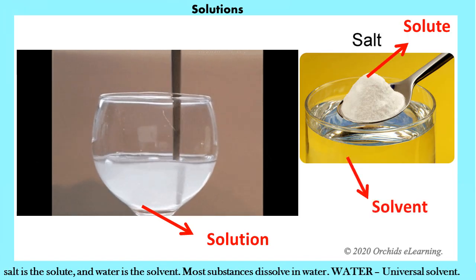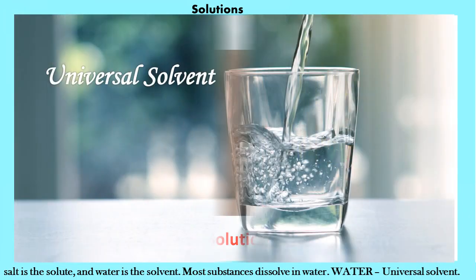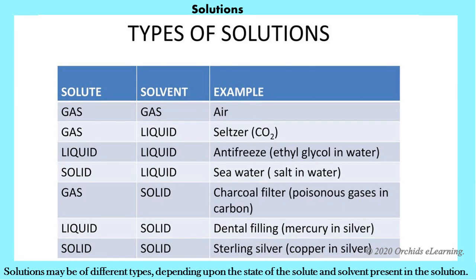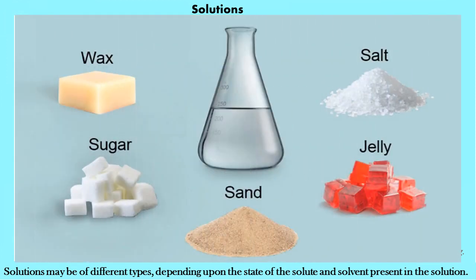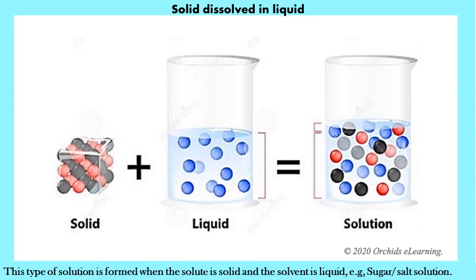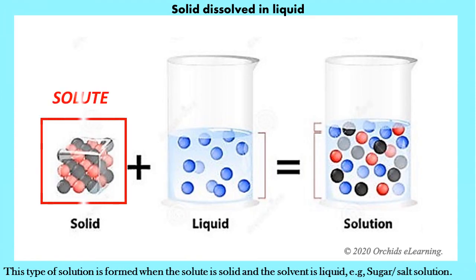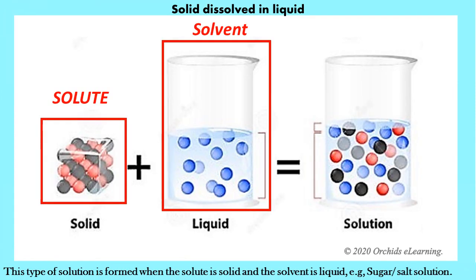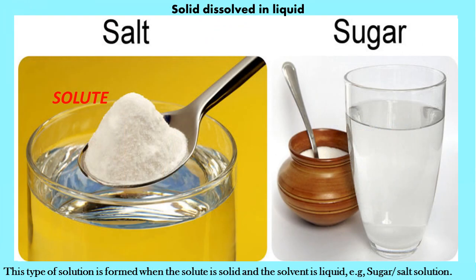Most substances dissolve in water; hence, water is also known as the universal solvent. Solutions may be of different types depending upon the state of the solute and solvent. Solid dissolved in liquid: this type of solution is formed when the solute is solid and the solvent is liquid — for example, sugar solution and salt solution.